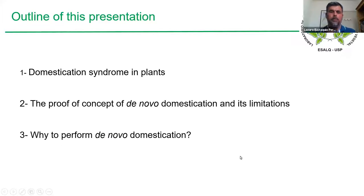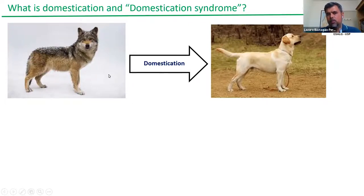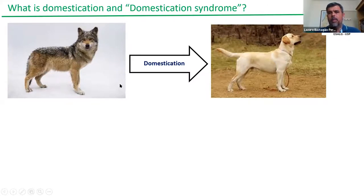The first one will be about the domestication syndrome concept. But before we go to plants, I will introduce this concept using animals, because I think that you are more familiar with the dog, for example, than a plant. The most important thing, of course, you already know, is that there is a huge modification in the behavior. So we have this docile animal, and here we have this ferocious animal that is the wolf.